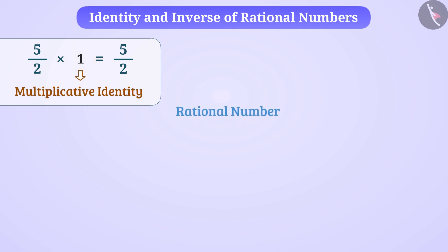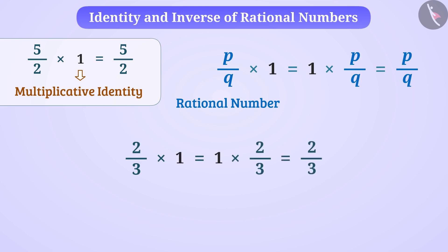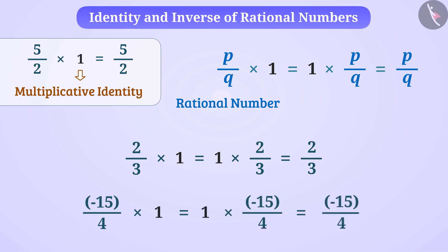In brief, for a rational number p/q: p/q × 1 = 1 × p/q = p/q. For example, 2/3 × 1 = 2/3, and (-15/4) × 1 = -15/4.